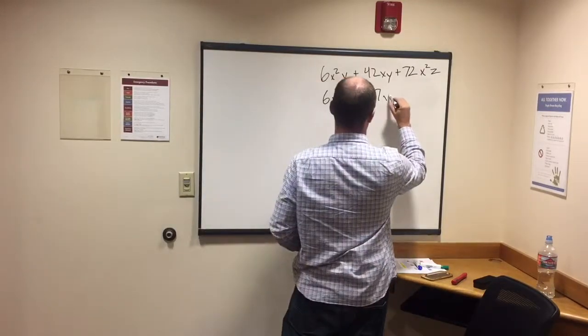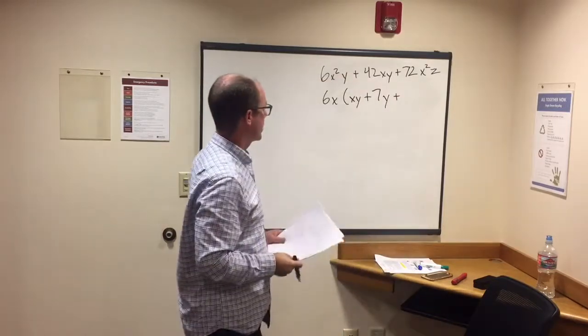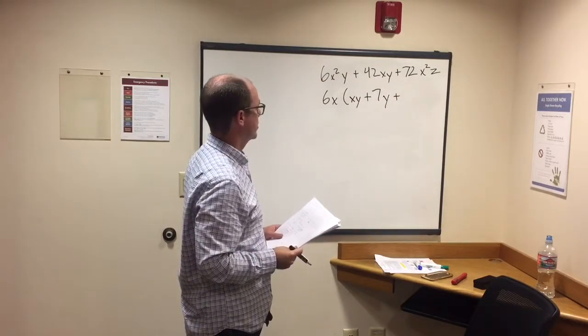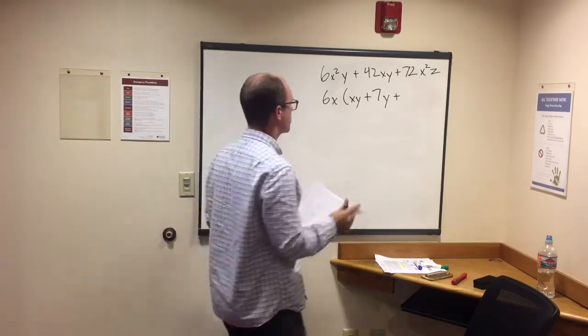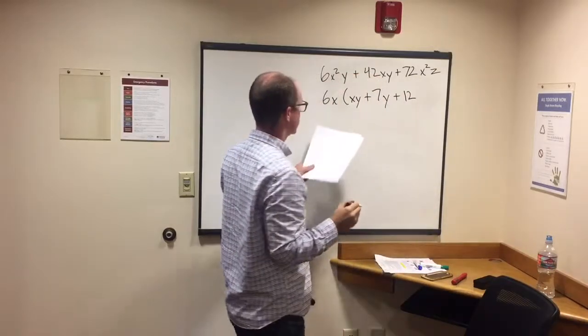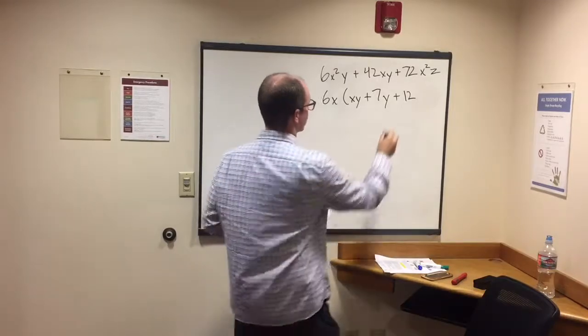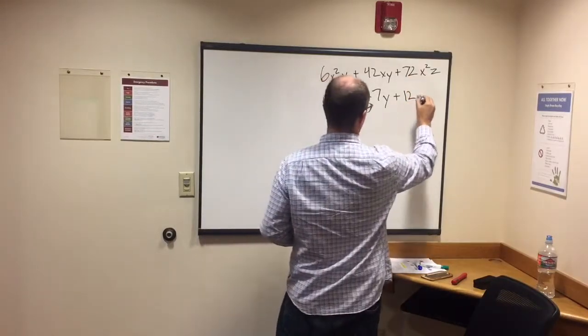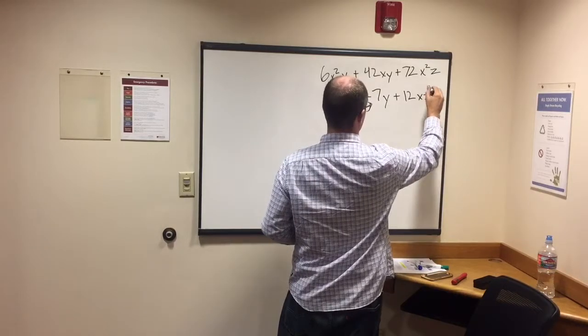throw a y on there - that looks good. The final one: 72. So 6 times 12 is 72, so I start with 12. We've got 6x here; again, x times x gives me the x squared up here that I need, so I put an x on here, and then we've got a z. That's what I do. Now you can also, if you do this and you're like,